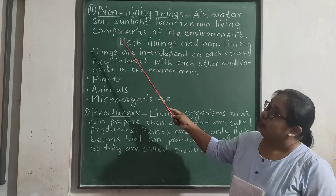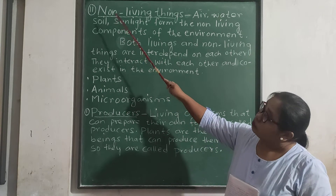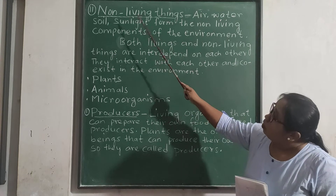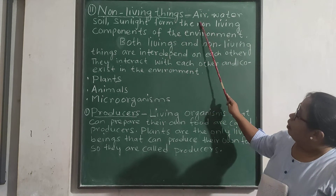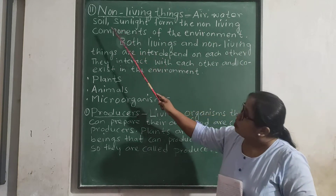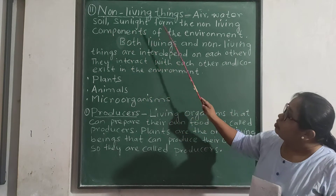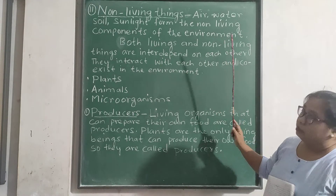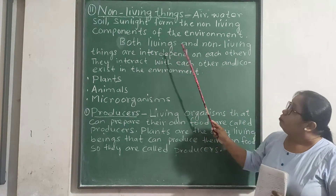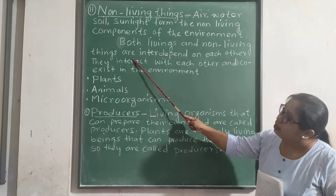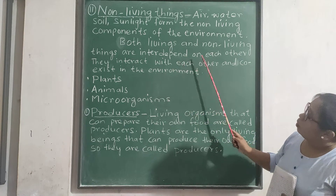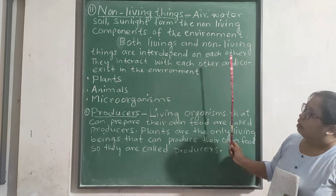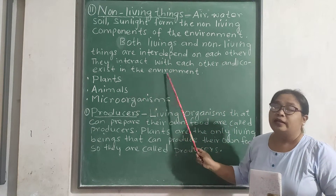Now let us discuss non-living things. Non-living things include air, water, soil, and sunlight — these are the non-living components of the environment. Both living and non-living things are interdependent on each other. They interact with each other and co-exist in the environment.